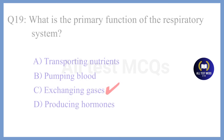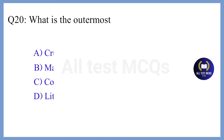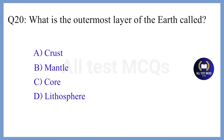Question 20. What is the outermost layer of the earth called? The correct answer is Option A. Crust.